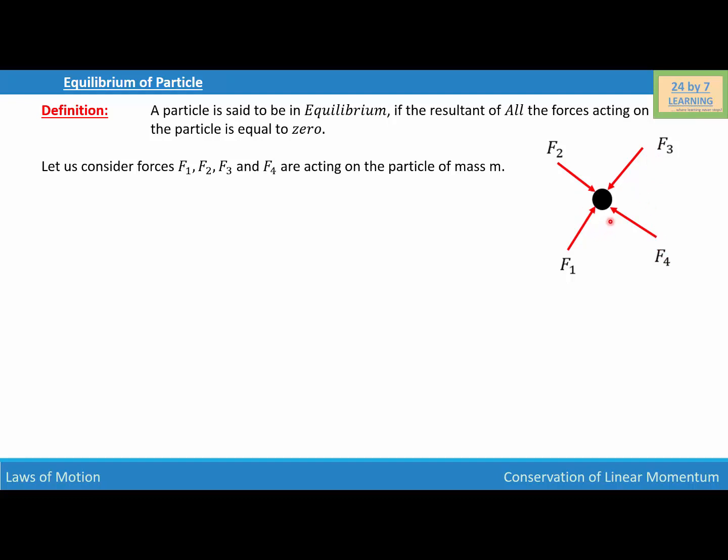If we want to prove that this particle is in equilibrium, we need to prove that the sum of all the forces is equal to zero. The particle will be in equilibrium if F1 plus F2 plus F3 plus F4 equals zero, which simply means that sigma F equals zero. In other words, the sum of all the forces equals zero.